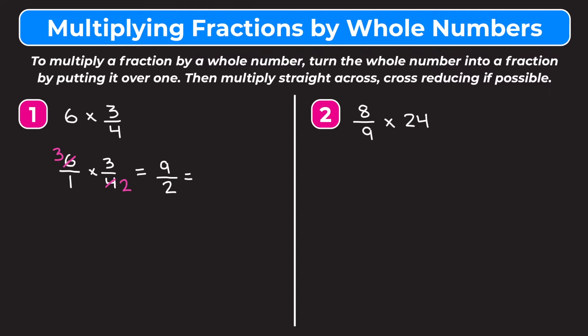Finally, we change nine-halves into a mixed number. Two goes into nine four times; two times four is eight, so there's one left over. So nine halves equals four and a half — that's our answer.